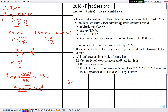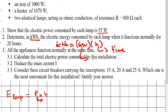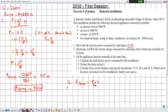In part two, they ask us to determine, in kilowatt-hours, the electric energy consumed by each lamp when it functions normally for 20 hours. The expression for electric energy is E equals P times t, where P corresponds to the lamp's power. Since the answer must be in kilowatt-hours, the power must be in kilowatts. The lamp power is 55 watts.